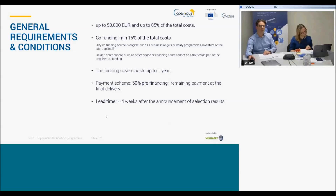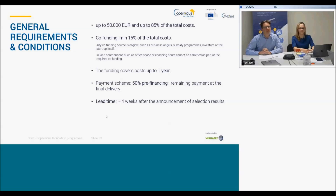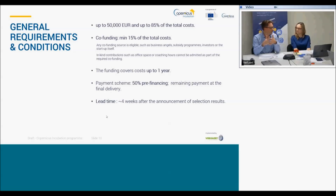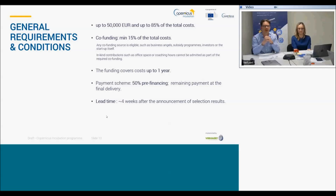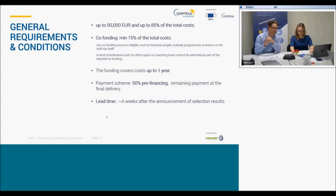You can get up to 50K for your funding, but this is only 85% of the total cost. As a start-up, you need co-funding of minimum 15%. This 15% can come from almost anywhere — your own funding, an incubation fund, venture capitalists, friends, or family. You can also use other subsidy programs for the co-funding. The funding covers up to one year of operations. The payment scheme is attractive: you get 50% pre-financing and the remaining is delivered at the final delivery.